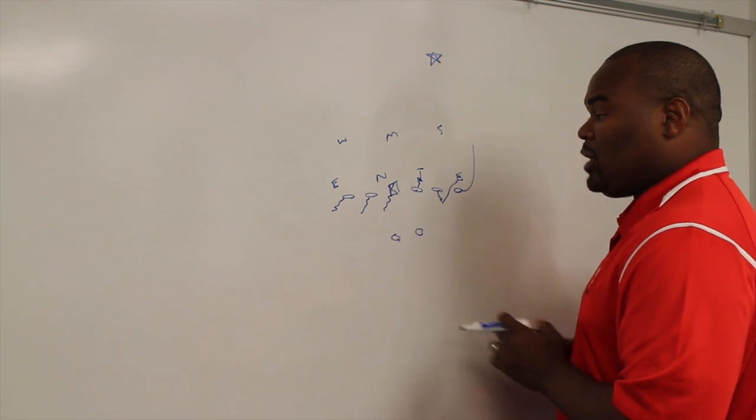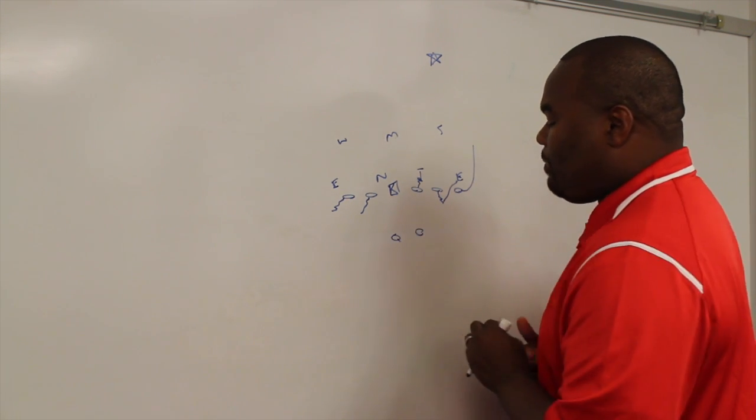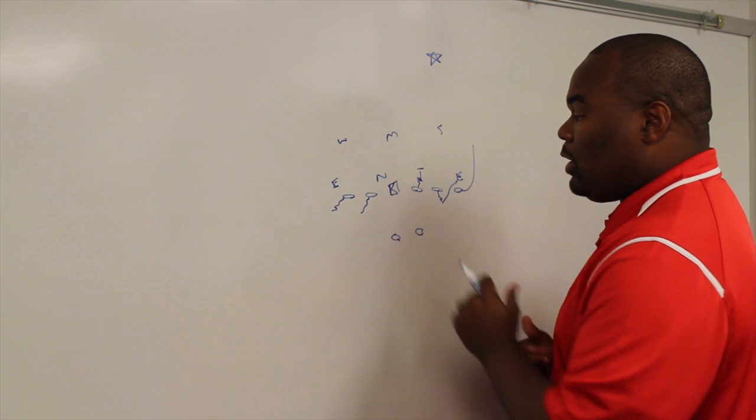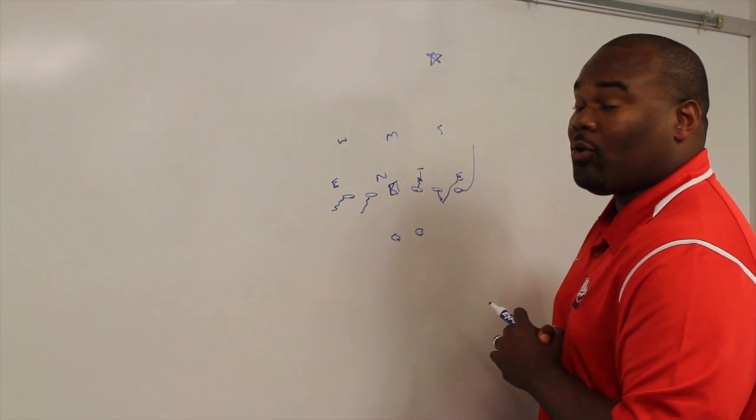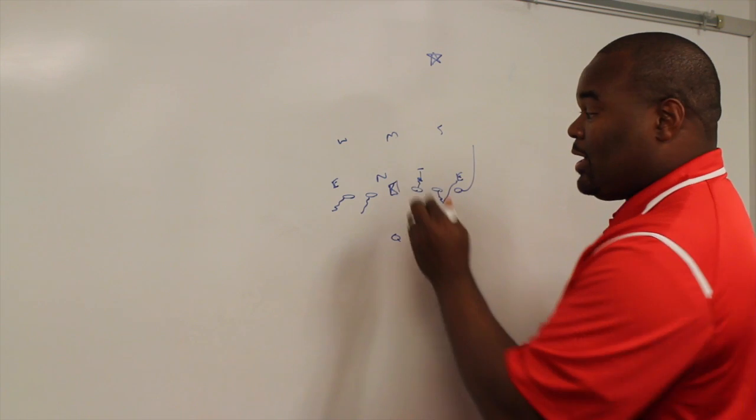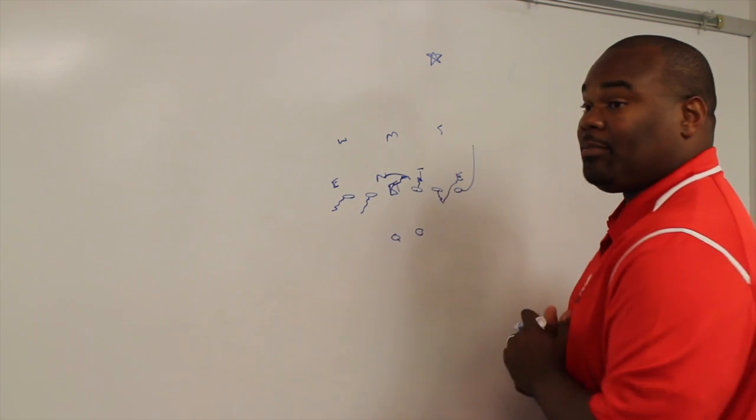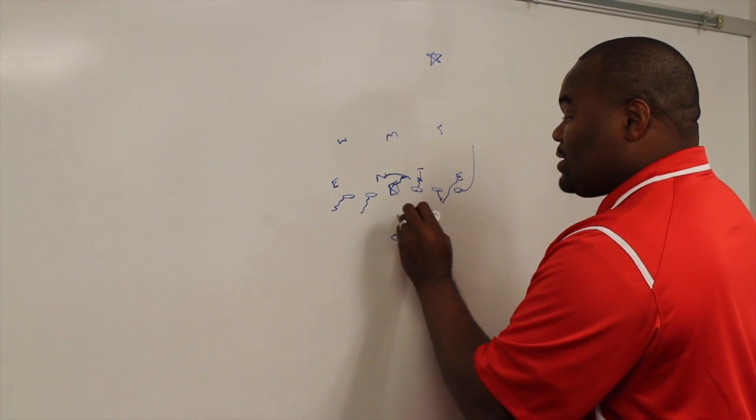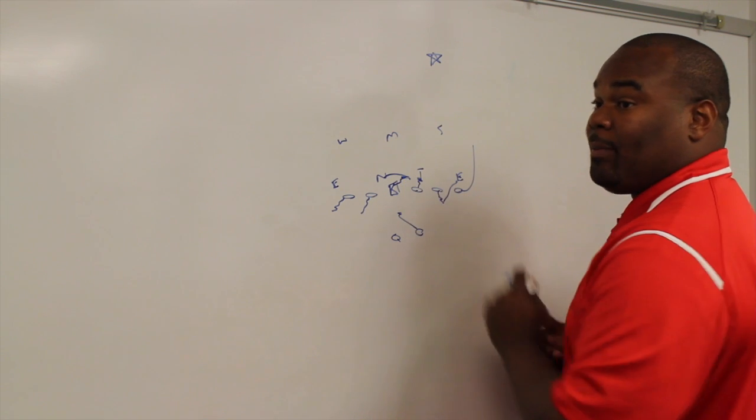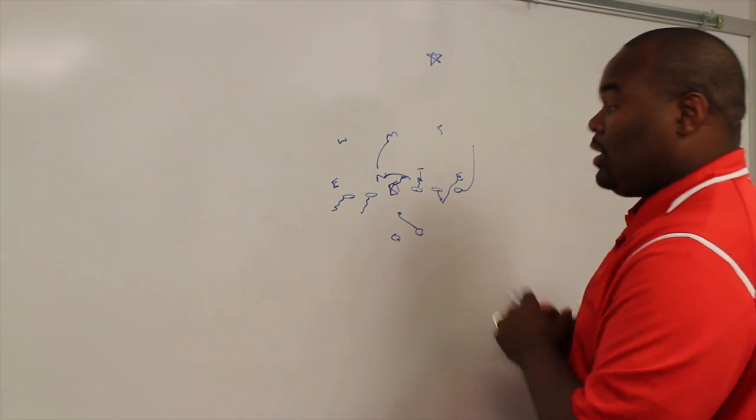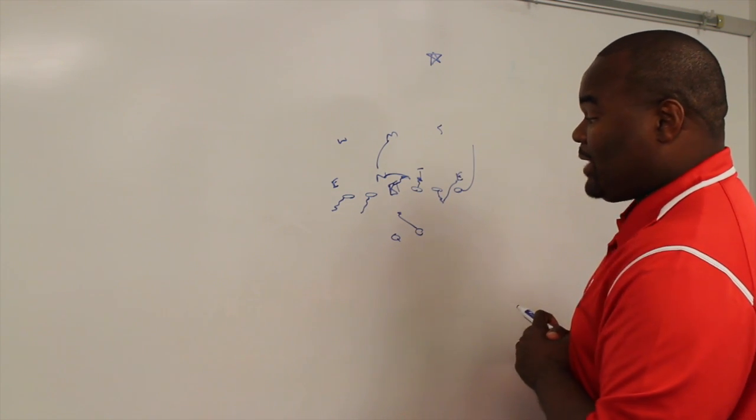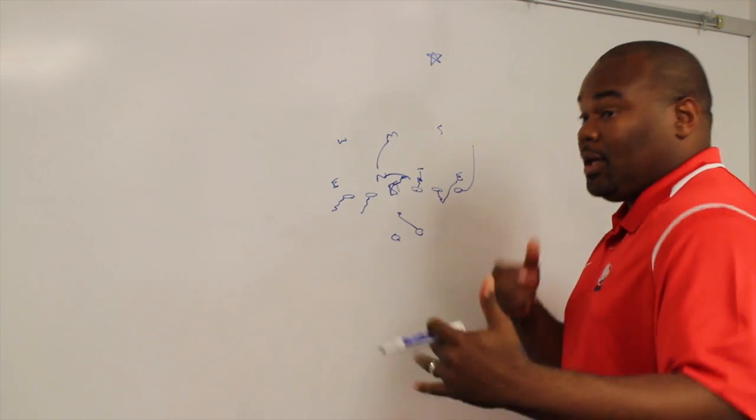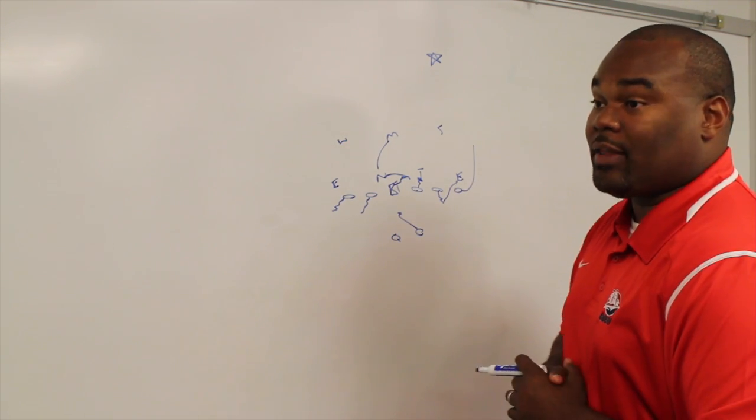The other thing that we will do is put our running back on what we call a gap exchange alert. That involves taking this a little bit further and involving the center. We tell the center on our slide side he's going to lock on to the nose. Even if the nose comes across the man side, the center will carry that to the man side. He's locked on to him. Now if that happens, we put our back on alert for the backside A gap because now if they do any kind of switch, that leaves it free. So for that to happen, we need the back to come through and help out there. That's understanding how defenses will blitz us and knowing how they attack, here's our answer for that.